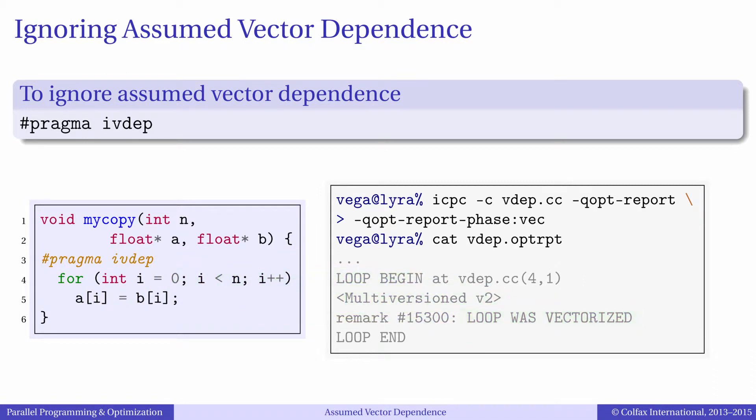When we override the compiler's analysis of vector dependence like that, we risk that the compiled application will produce incorrect results if vector dependence actually occurs at runtime. Therefore, pragma ivdep may be used only if we can control the pointer variables in vector loops and guarantee the absence of vector dependence at runtime. Note that pragma ivdep applies to an entire loop.